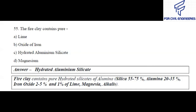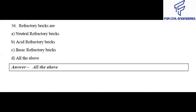Question number 55: Fire clay contains — pure lime, oxide of iron, hydrated aluminum silicate, or magnesium? The right answer is hydrated aluminum silicate. Fire clay contains pure hydrated silicate of alumina. In fire clay, the percentage of silica is about 55 to 75 percent, alumina 20 to 35 percent, iron oxide 2 to 5 percent, and small amounts of lime, magnesia, and alkalis.